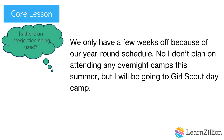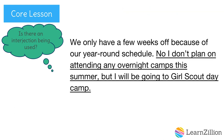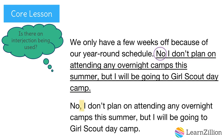Let's look at the next part of our draft: We only have a few weeks off because of our year-round schedule. No, I don't plan on attending any overnight camps this summer, but I will be going to Girl Scout day camp. Underline the sentence that contains the interjection. You should have underlined: No, I don't plan on attending any overnight camps this summer, but I will be going to Girl Scout day camp. It contains the opening interjection 'no.' There isn't a comma after the interjection 'no' — let's fix that. We need to add the comma after 'no' to set off the interjection from the rest of the sentence.